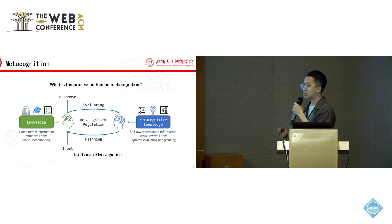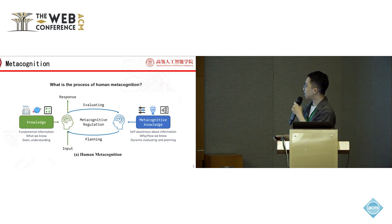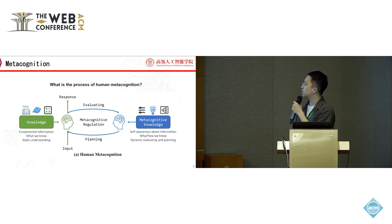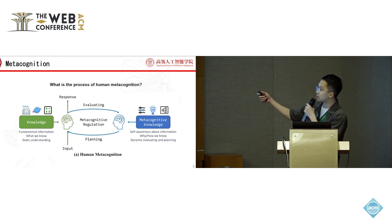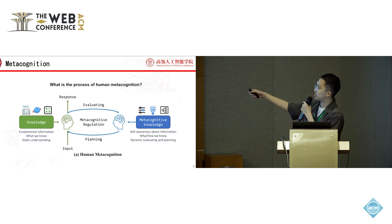The concept of metacognition comes from cognitive science. In the human metacognition process, the left green part is the human cognition process: when a problem comes, we use our own knowledge to solve it, focusing on fundamental information and what we know — it is a static understanding process. The right part is the metacognitive knowledge process, which uses another brain to think about what we know, how we know, and why we know that. It is a dynamic evaluating and planning phase, and the whole framework is called metacognitive regulation.